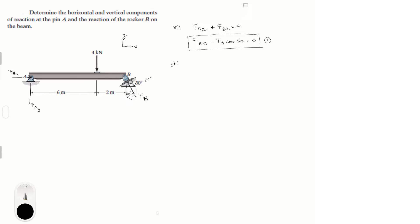Second equation: we're going to go for Y. In the Y, we know that F of A in the Y plus F of B in the Y minus the 4K force at the top, this force, is equal to 0. All of this is in Newtons, but let me just skip the unit so it doesn't get too messy. So this means that F of A in the Y plus F of B sine of 60 minus 4K is equal to 0. This is equation 2.